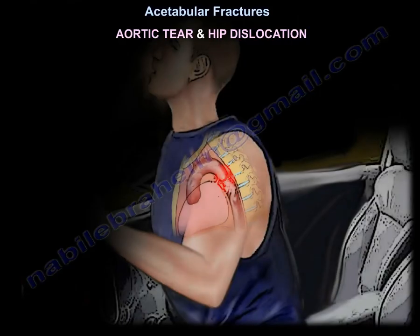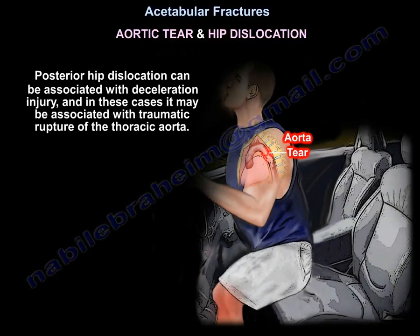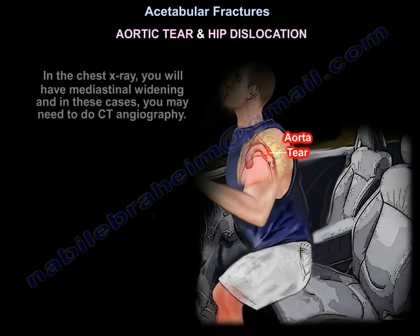Aortic tear and hip dislocation: posterior hip dislocation can be associated with deceleration injury, and in these cases may be associated with traumatic rupture of the thoracic aorta. On chest x-ray you will see mediastinal widening, and CT angiography may be required.